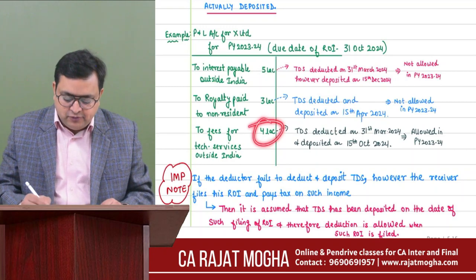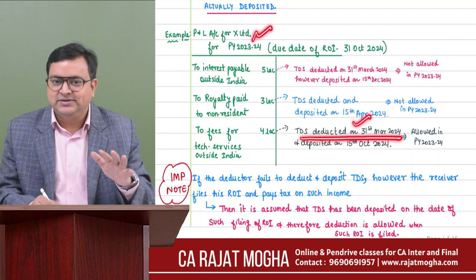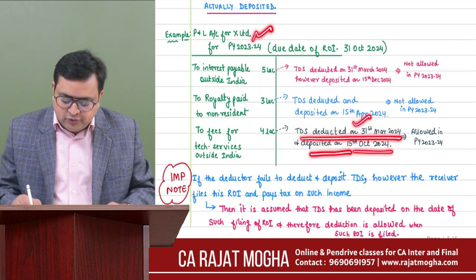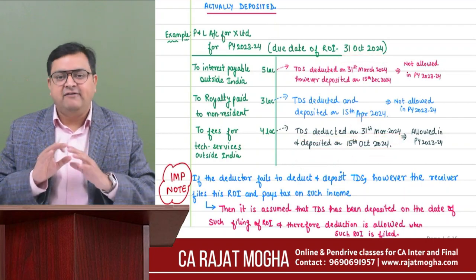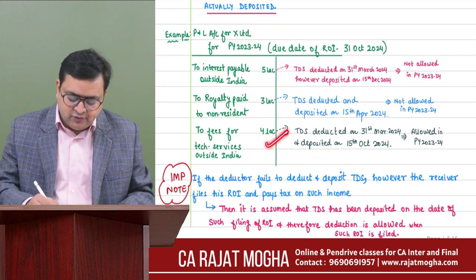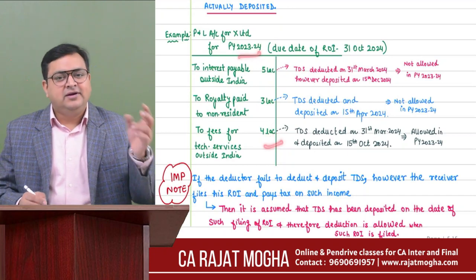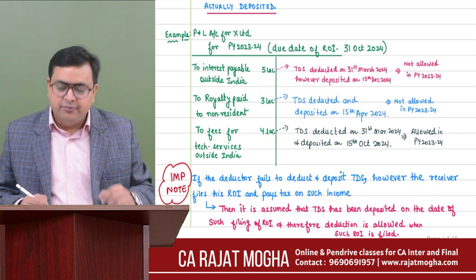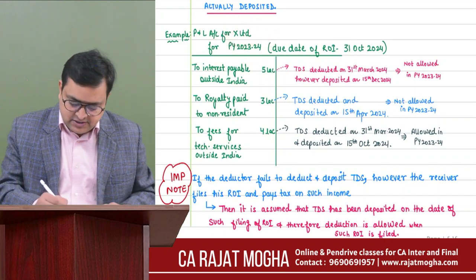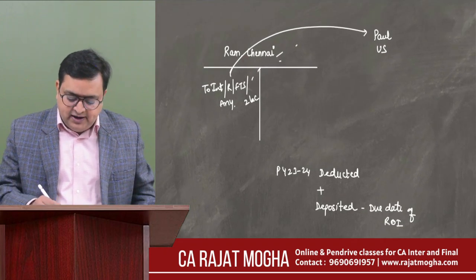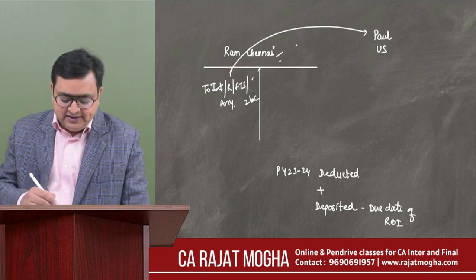Third example: fees for technical services — ₹4 lakh. TDS is deducted on 31st March 2024 (within the previous year — first condition satisfied) and deposited on 15th October 2024 (on or before 31st October — second condition also satisfied). Both conditions satisfied, so we allow this ₹4 lakh. The ₹5 lakh (interest) and ₹3 lakh (royalty) are not allowed, but the ₹4 lakh fees for technical services is allowed in this year itself.